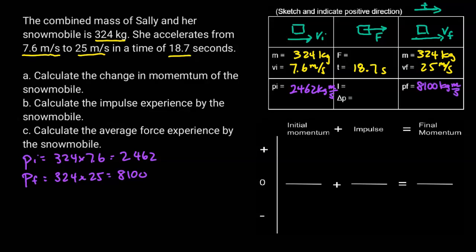To find the change in momentum, it's just going to be the final minus the initial: 8,100 minus 2,462, and we get 5,638 kilograms meters per second.